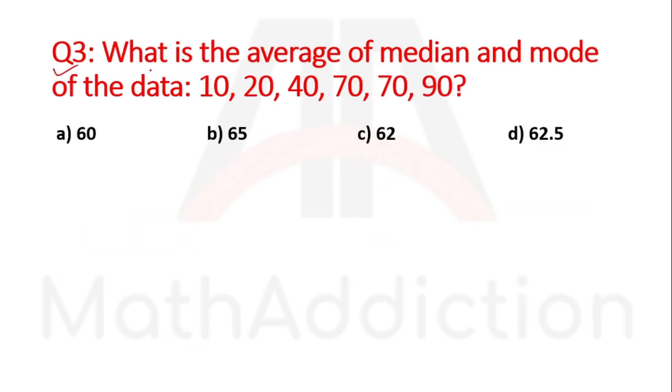Question number three: What is the average of median and mode of the data 10, 20, 40, 70, 70, 90? First we find the median. The data must be in ascending or descending order. Here the data is already given in ascending order.